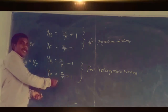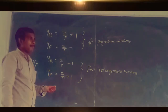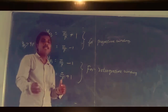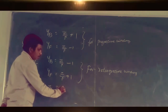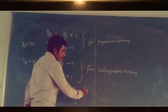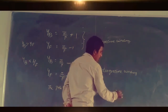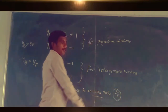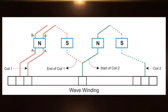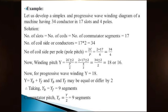The pole pitch must always be an even number. Z divided by P must always be equal to an even number — this is a very important point regarding pole pitch.